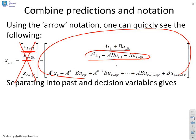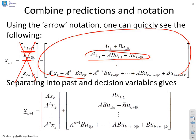Next, what I want to do is separate this into past variables, things that I know, and the decision variables, things that I need to choose, the future inputs. And I can do that like this.